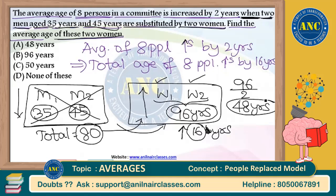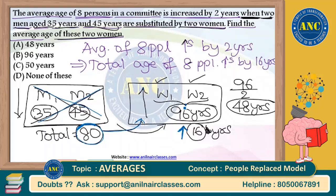Total age of 8 people will increase by 16 years. This happens only when the 2 men aged 35 and 45, total 80, go out and are replaced by 2 women. The 80 years going out comes back in the form of women, and along with that 80 there is an increase of 16, so the women bring 80 + 16 = 96. The 2 women's sum is 96, average is 48.